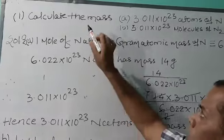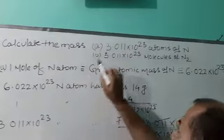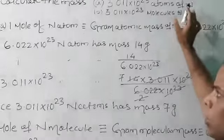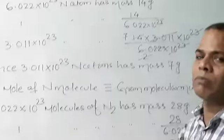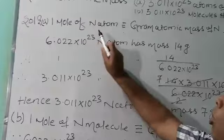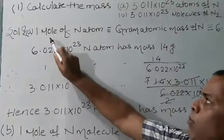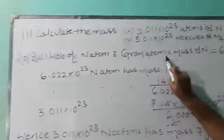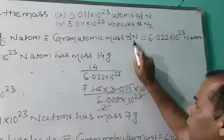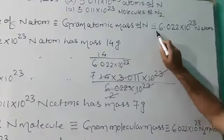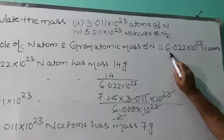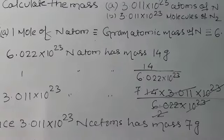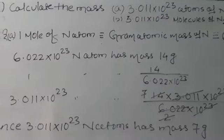Now let us solve the first one: calculate the mass of 3.011 into 10 to the power 23 atoms of nitrogen. As per mole concept, 1 mole of nitrogen atom is equivalent to gram atomic mass of nitrogen, also equivalent to Avogadro's number, which is equal to 6.022 into 10 to the power 23 nitrogen atoms.